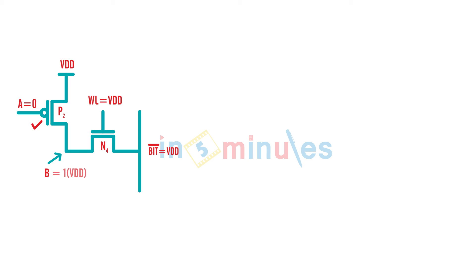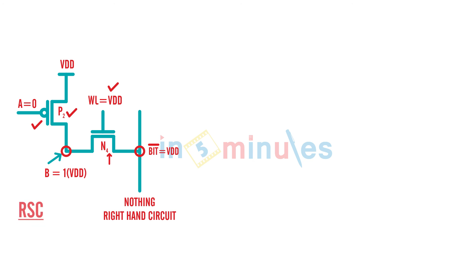The assumption was that B was already at logic 1, and P2 was keeping it that way. Since N4 was on and both its terminals — node B and bit bar — were at VDD, there was no current flow. So nothing was happening on the right side of the circuit. The conclusion was: to read a 0 at A, the W/L of N1 must be stronger than the W/L of N3, completing the read stability criteria.